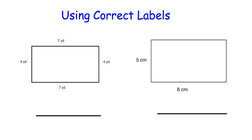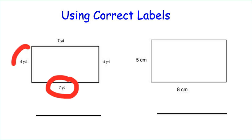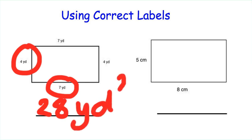When we're finding area it's important that we use the correct labels. You'll notice here that we've got yards and centimeters, so we want to use the correct labels — we don't want to label something miles if it's only in centimeters. For this first rectangle on the left, base of 7, height of 4: 7 times 4 is 28, and the label would be yards squared.